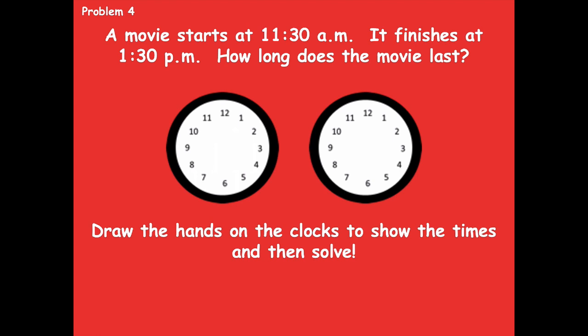For 11:30 a.m., the minute hand points to the 6 for 30 minutes, and the hour hand is between the 11 and the 12. For 1:30 p.m., the hour hand would be between the 1 and the 2 — not straight on the 1, because that would be 1 o'clock — so it's halfway between the 1 and the 2, and the minute hand is on the 6 for 30 minutes. For this one I couldn't just subtract because it goes from a.m. to p.m. So I counted around the hours: 11:30 to 12:30 is one hour, and 12:30 to 1:30 is two hours. So the movie was two hours long.